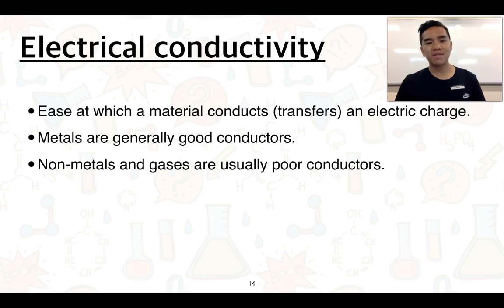Electrical conductivity is just about how well a material can conduct or transfer an electric charge. And again, we find the same characteristics. Metals are generally good conductors of electricity, so we can find them in our household wiring.